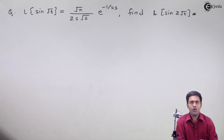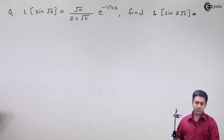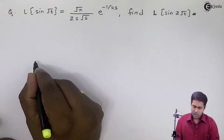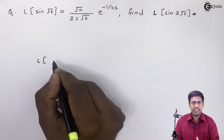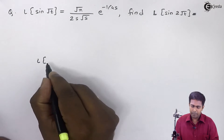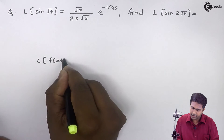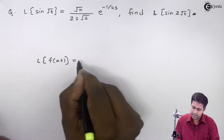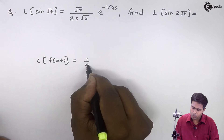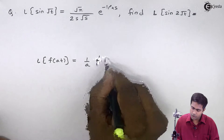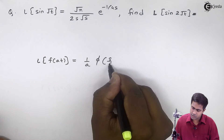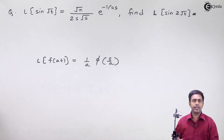What is the change of scale property? By change of scale property, we say that the Laplace transform of f(at) is nothing but 1 upon a, phi of s by a.